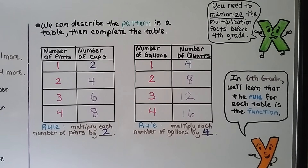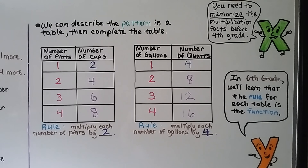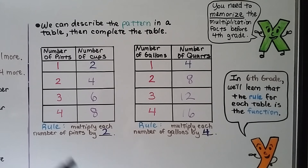In 6th grade, we'll learn that the rule for each table is called the function — you'll actually call them function tables. A function is like a job: the function of a coffee maker is to make coffee, the function of a toaster is to make toast, and the function of this table is to multiply by 4, and this one is to multiply by 2.